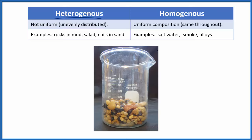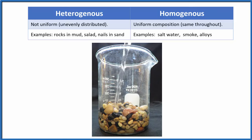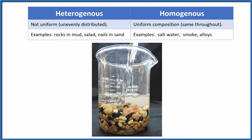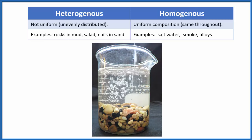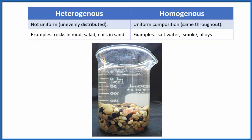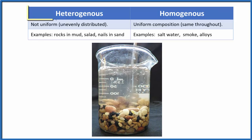If we look at this beaker below, it has rocks and pebbles in it. If we add water to it, we'll have a mixture — two different substances. Because the rocks are all clumped together at the bottom and the water is at the top and between the rocks, we say that the beaker with water and rocks is heterogeneous.